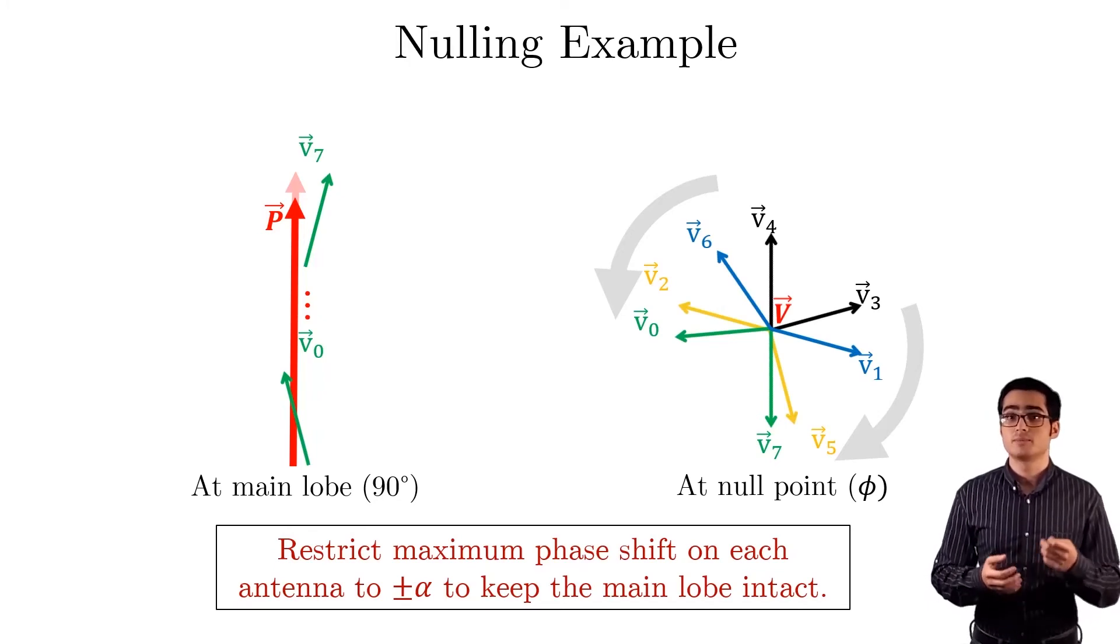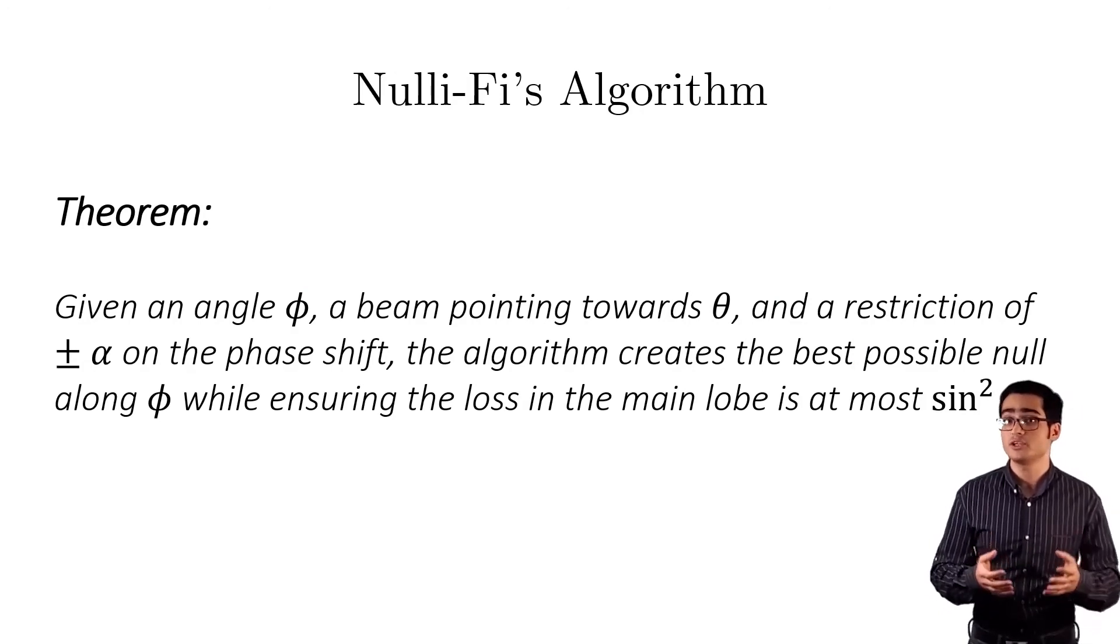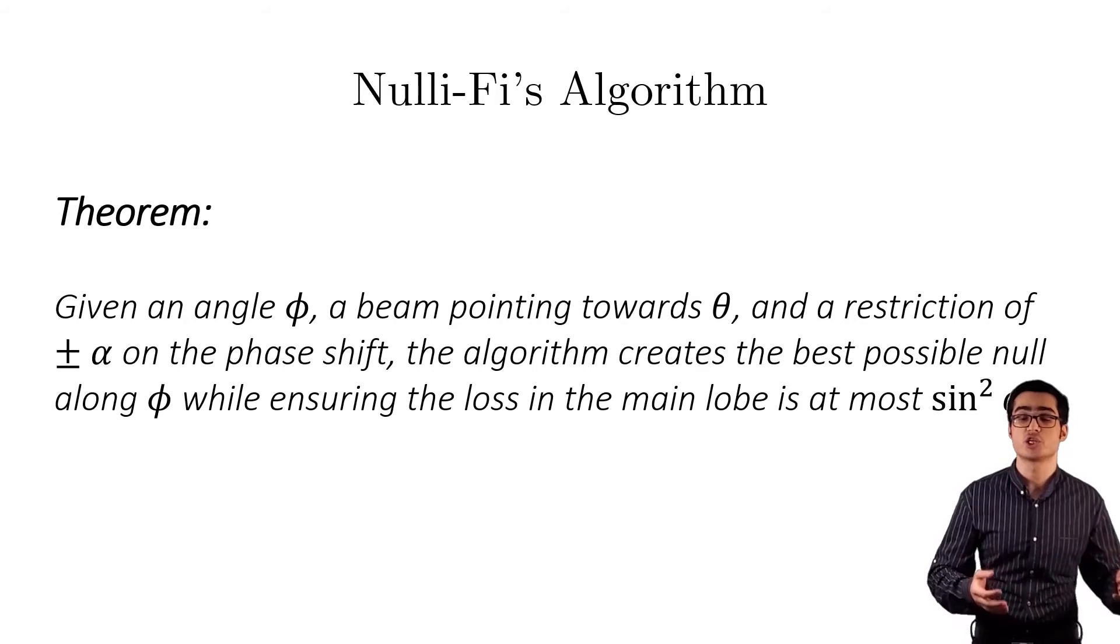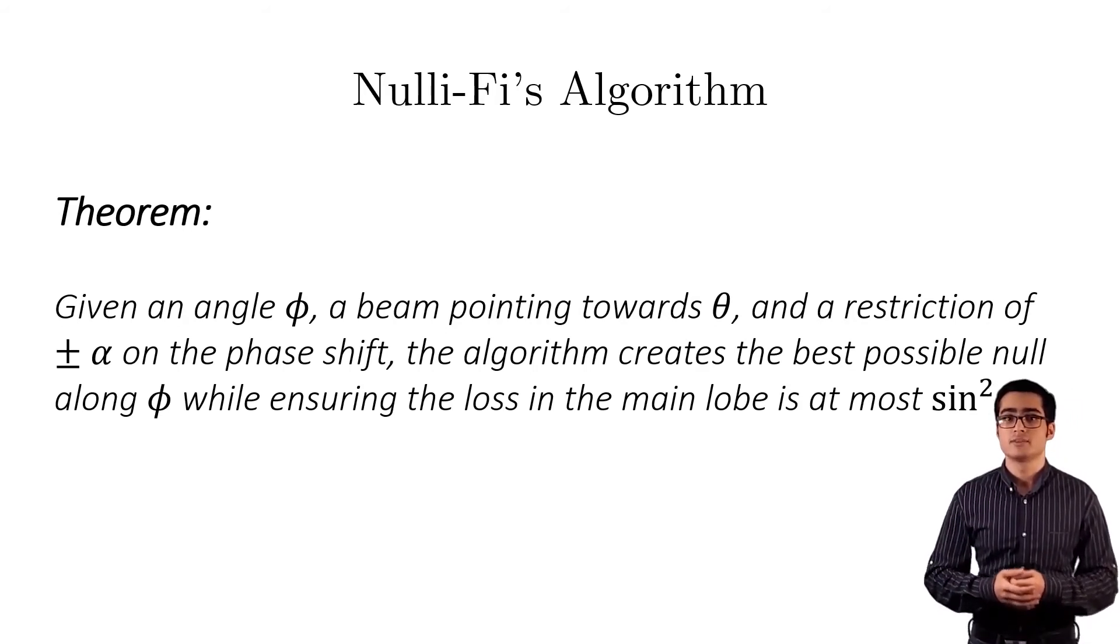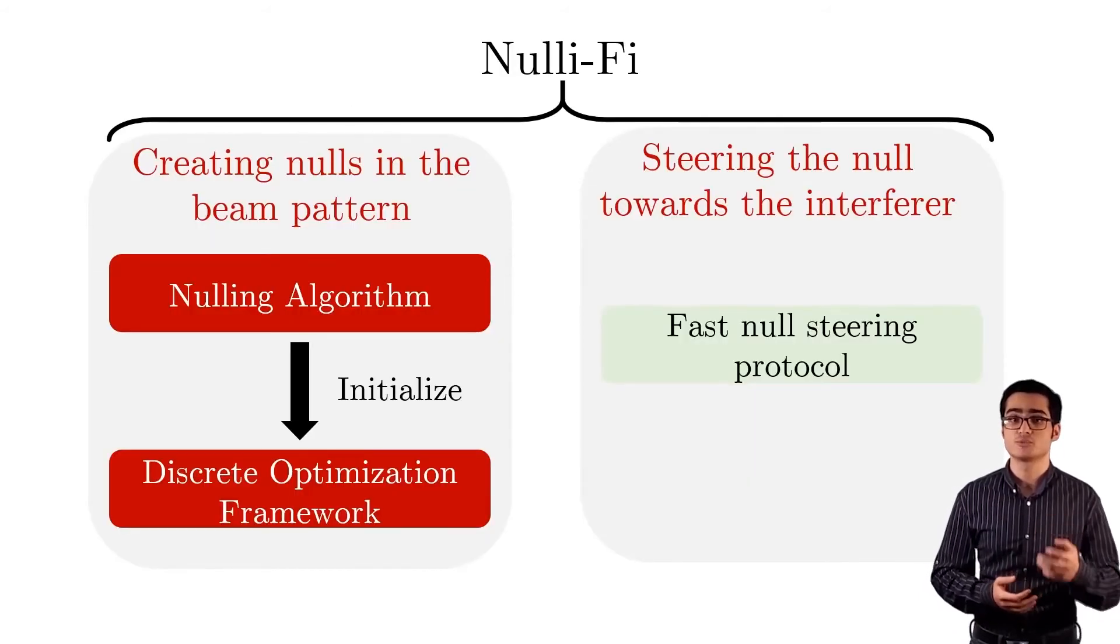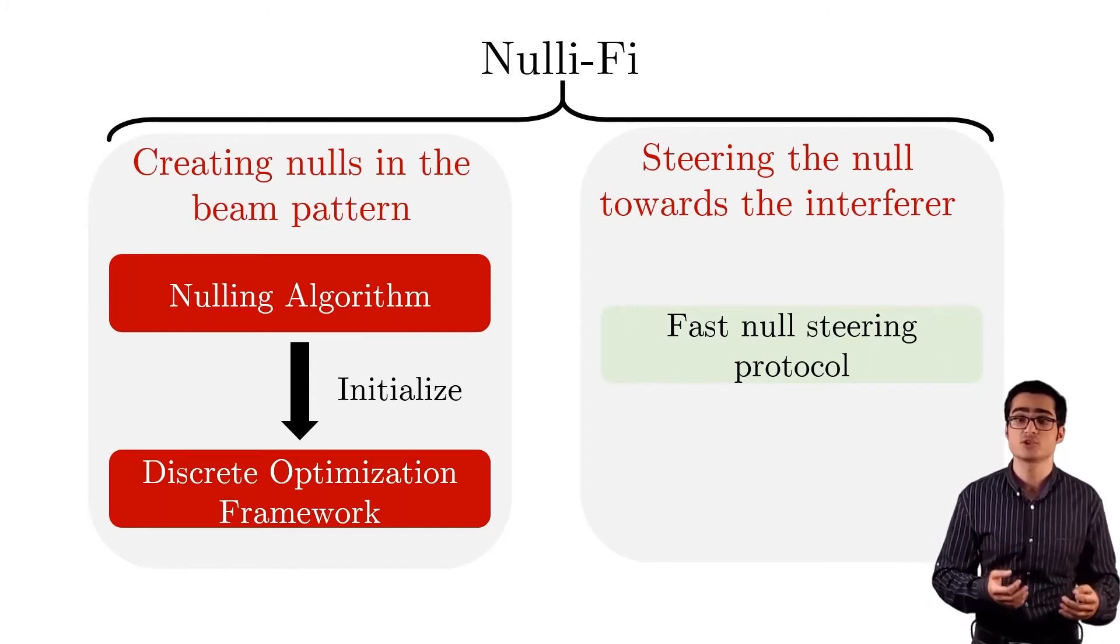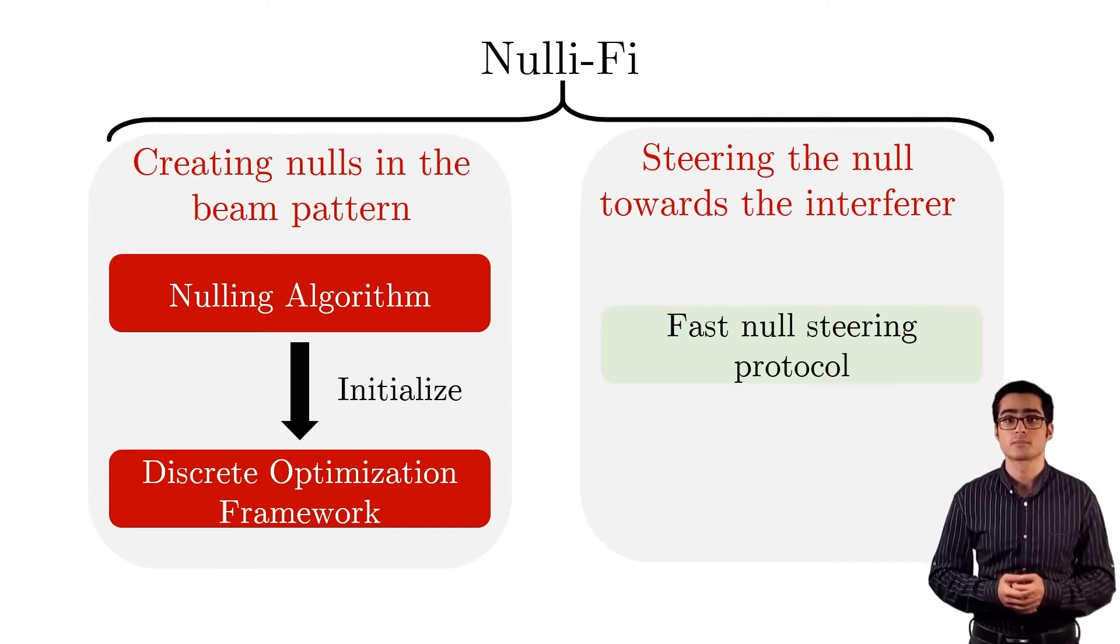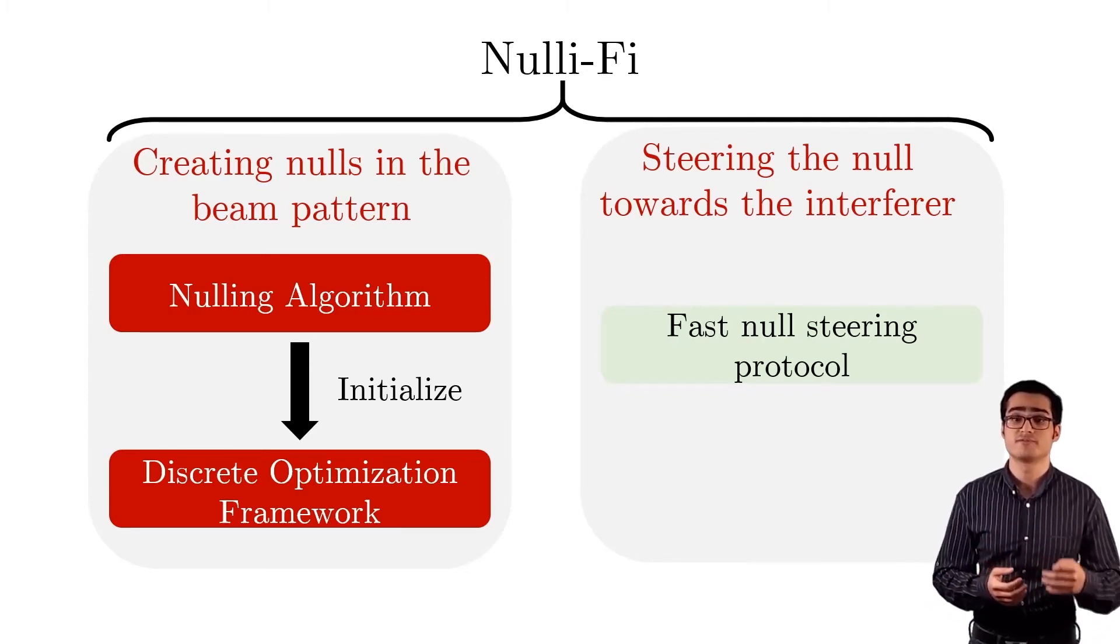In the paper, we prove the following theorem. Informally, this theorem states that the algorithm will find the optimal solution given the restriction on the phase shifts. The results of this algorithm are used to initialize a discrete optimization framework that is inspired by genetic algorithms and incorporates hardware imperfections to enable creating nulls in practice. In the interest of time, I will not go into the details which we can find in the paper.